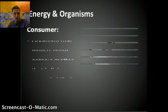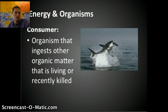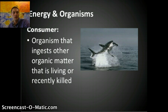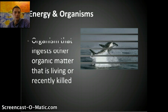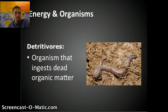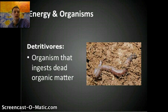A consumer is an organism that ingests other organic matter that is living or recently killed — a good example would be a great white shark eating a seal. A detritivore is an organism that ingests dead organic matter. These are really important because they help to break down and release nutrients back into the ecosystem. A good example of a detritivore is an earthworm.